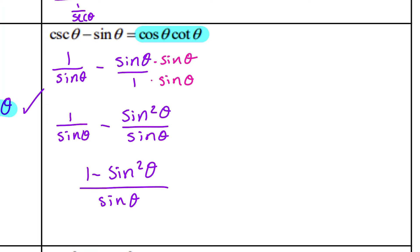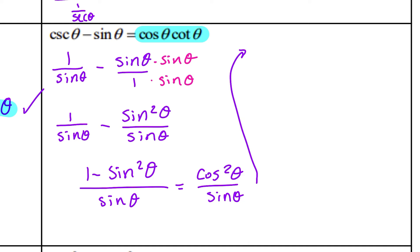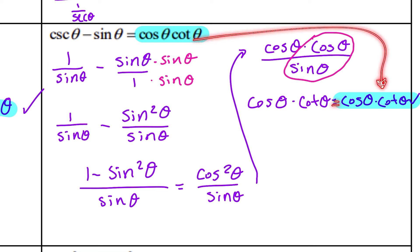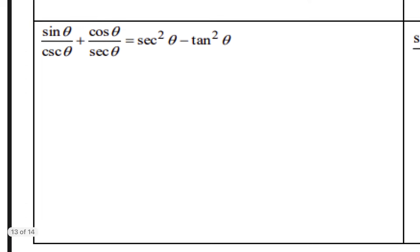One minus sine squared is cosine squared of theta. I can rewrite cosine squared as cosine times cosine over sine. This is similar to the first example — the first cosine stays, and cosine over sine becomes cotangent of theta. So this equals cosine times cotangent, which matches what we're trying to prove. I always write that final equals sign and bring the target expression down to show the two sides are exactly the same at the end.